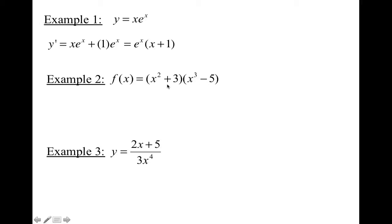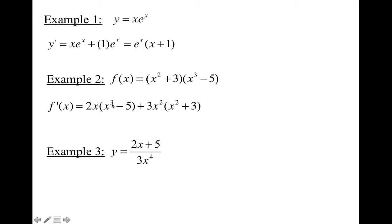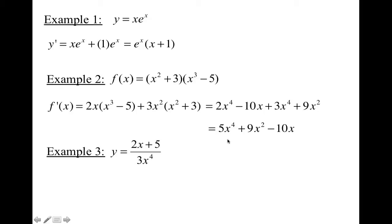Example two. Yes, we could distribute through and get a power function — that is one way — but sometimes it gets tedious and you don't want to distribute. So we can use the product rule here. Take the derivative of the first term, x squared plus 3, which is 2x, times the second function unchanged, plus the derivative of the second function, x cubed minus 5, which is 3x squared, times the first function. Distributing through and combining like terms gives 5x to the fourth plus 9x squared minus 10x.